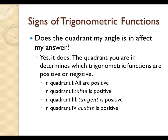Because it determines which trigonometric functions are positive or negative. In the case of quadrant 1, all of the trigonometric functions are positive. In the case of quadrant 2, sine and its reciprocal cosecant are positive. In the case of quadrant 3, tangent and its reciprocal cotangent are positive. In the case of quadrant 4, cosine and its reciprocal secant are positive.